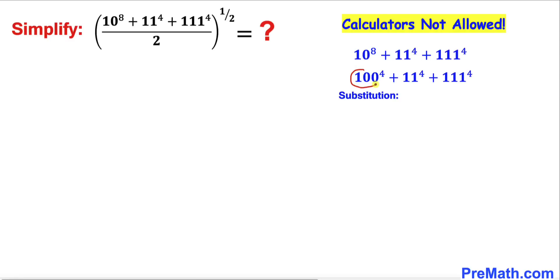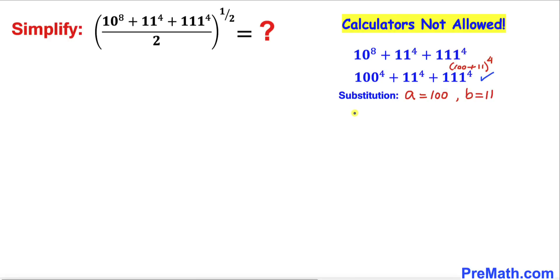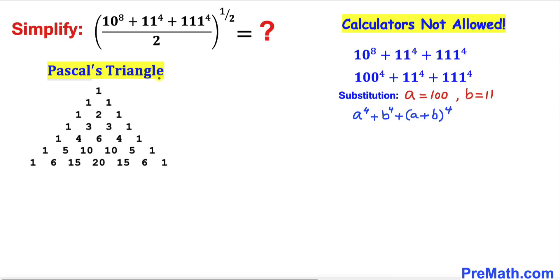Now let's make a substitution: let a = 100 and b = 11. Moreover, we can write 111 as (100 + 11), which is (a + b). So the whole expression in the numerator can be written as a^4 + b^4 + (a + b)^4.